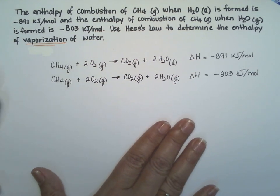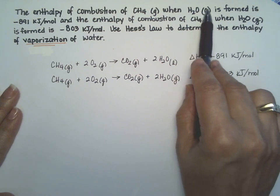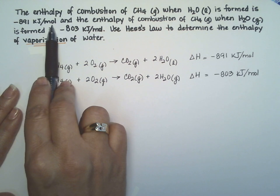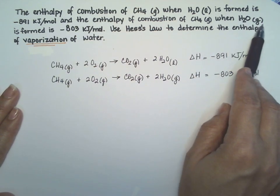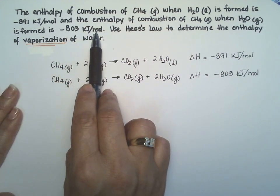This is from Chapter 7. The enthalpy of combustion of methane when water liquid is formed is minus 891 kilojoules per mole. The enthalpy of combustion of methane when water in the gas phase is formed is minus 803 kilojoules per mole.